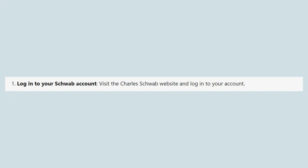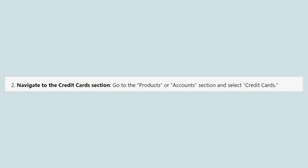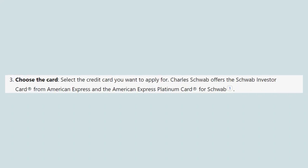First, visit the Charles Schwab website and log in to your account. Then, go to the Products or Accounts section and select Credit Cards.